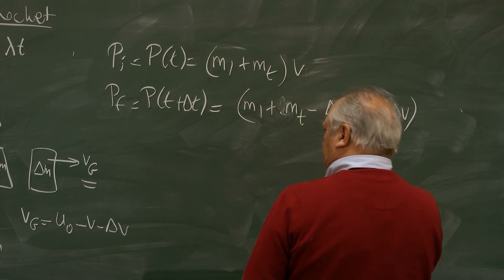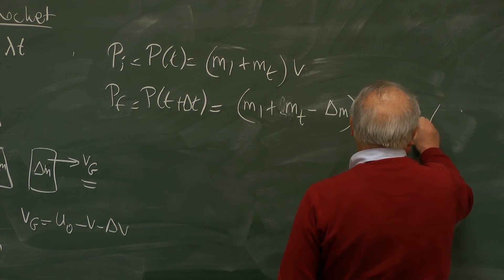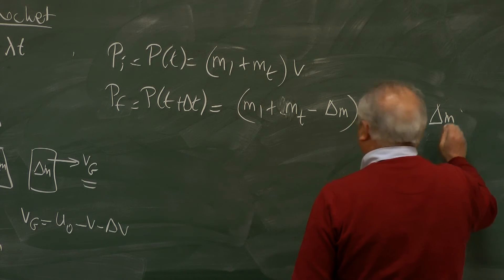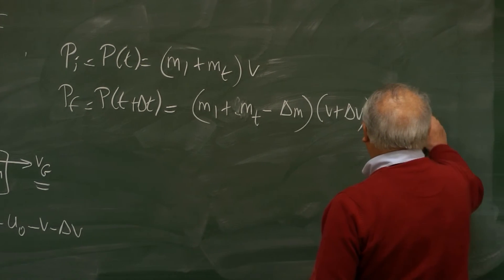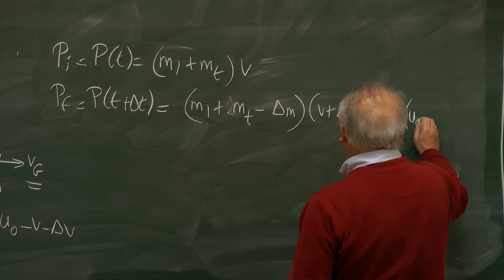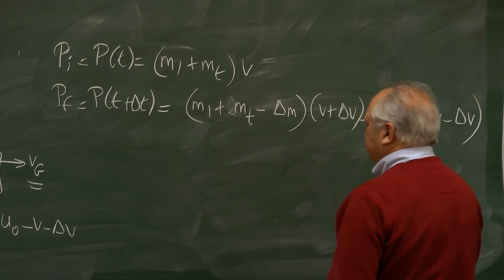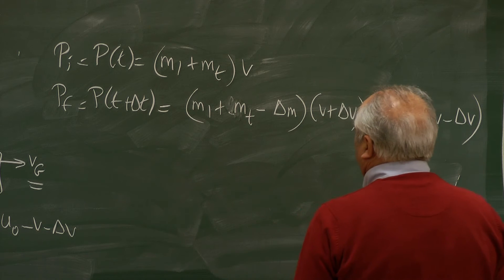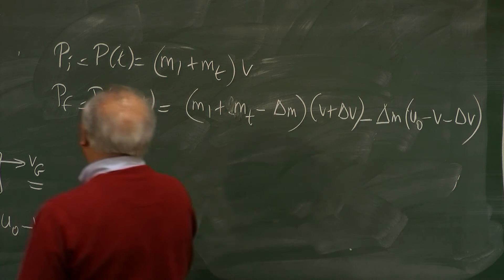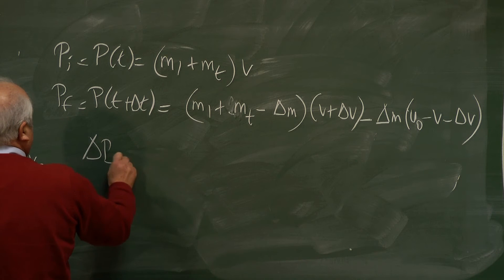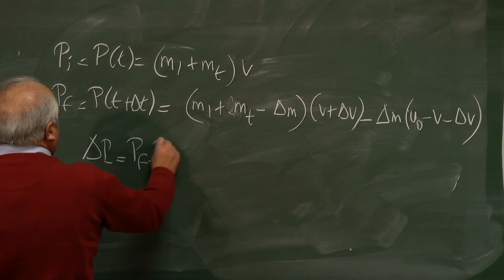Now to the right, we take it with a minus sign. Minus delta M times Vg which is U zero minus V minus delta V. And we subtract. Delta P is equal to PF minus PI.